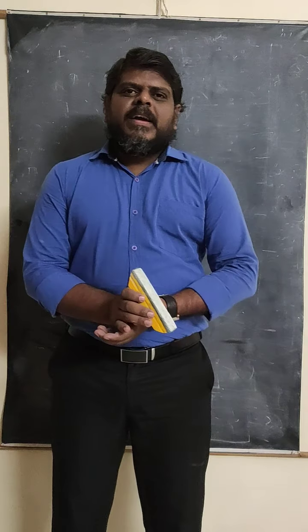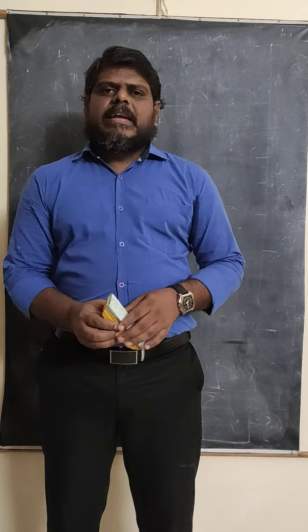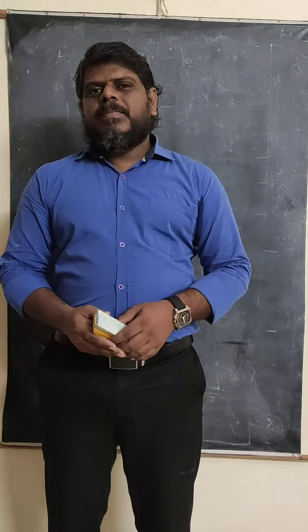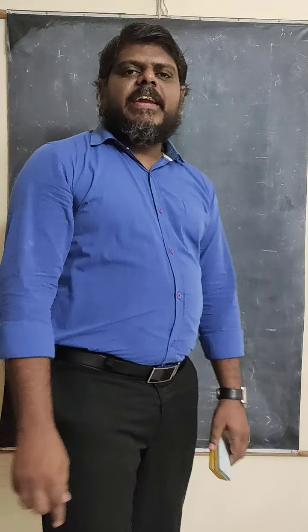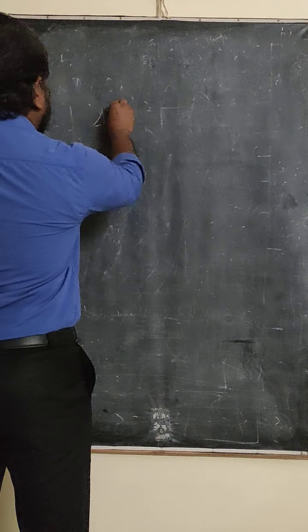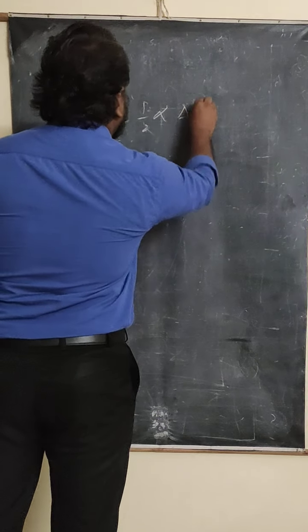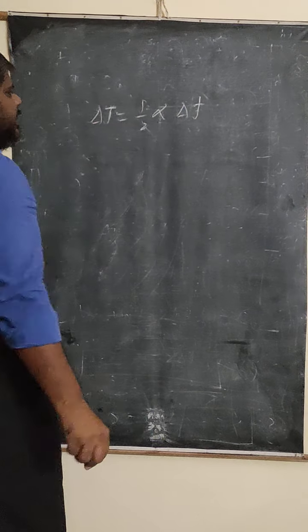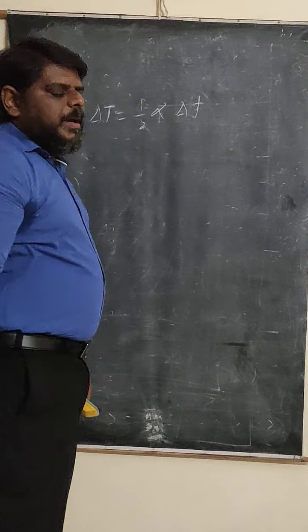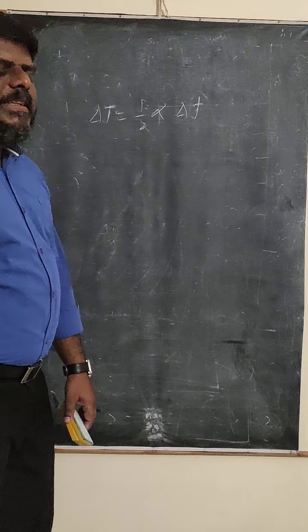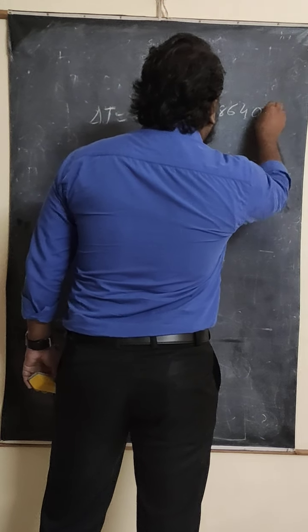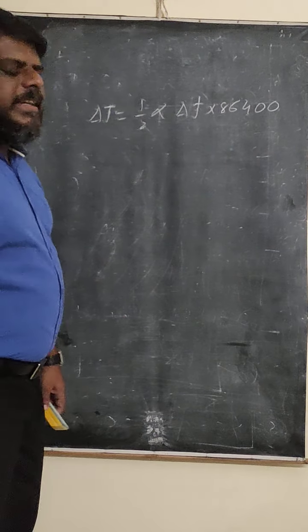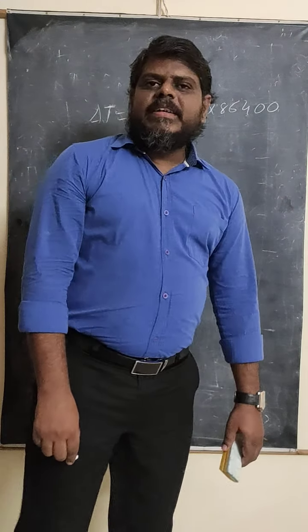Welcome to video classes. In the last class we discussed about the loss or gain of time due to linear expansion in the pendulum clock. The formula is delta T equals half into alpha into delta T, where delta capital T represents the change in time and small T represents temperature. This gives the changing time in one second. Multiplying by 86,400 gives the changing time per complete day.